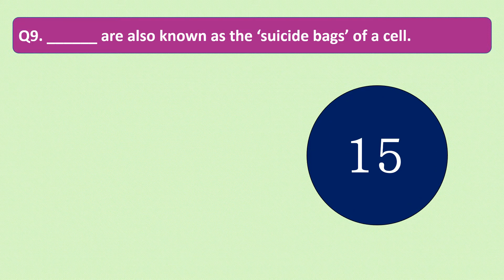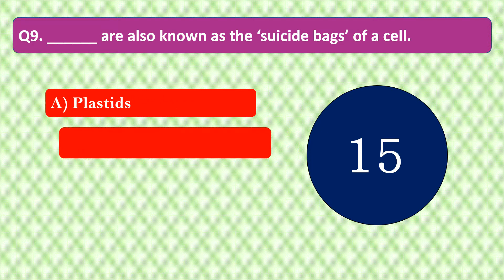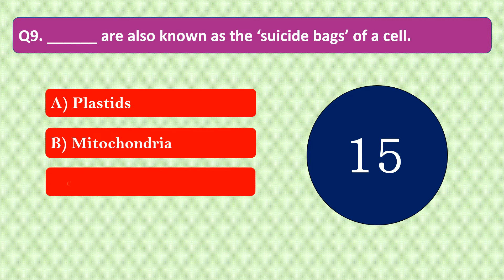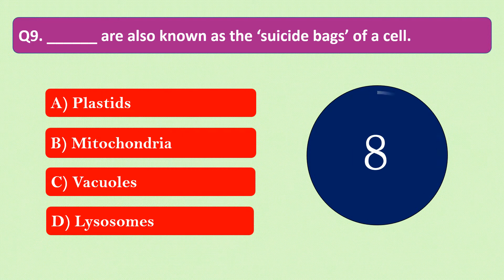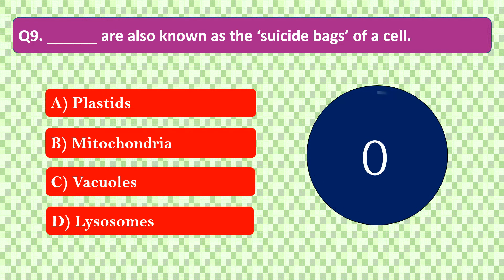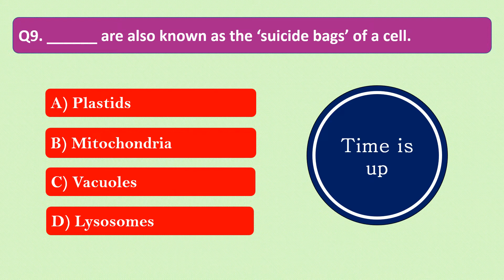Question number 9: Dash are also known as the suicide bags of a cell. The options are A. Plastids, B. Mitochondria, C. Vacuoles, or D. Lysosomes. Your time starts now. Your time is up and the right answer is option D: Lysosomes. Lysosomes are also known as the suicide bags of a cell.